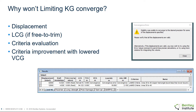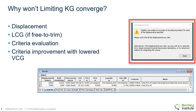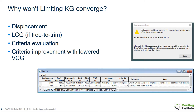If the analysis runs but fails to converge for one or more displacements, there are three likely reasons why this may happen. One, the displacement may be incorrect, or the LCG, if the analysis is free to trim. Two, the criteria may not be able to be evaluated. Three, the criteria that have been selected do not vary in a predictable way with the VCG.